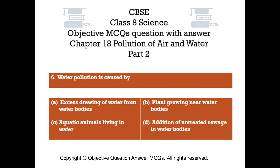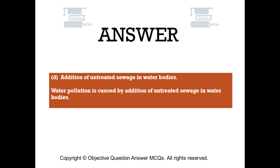Question number 6. Water pollution is caused by: Option A: Excess drawing of water from water bodies. Option B: Plants growing near water bodies. Option C: Aquatic animals living in water. Option D: Addition of untreated sewage in water bodies. The right answer is Option D. Water pollution is caused by addition of untreated sewage in water bodies.